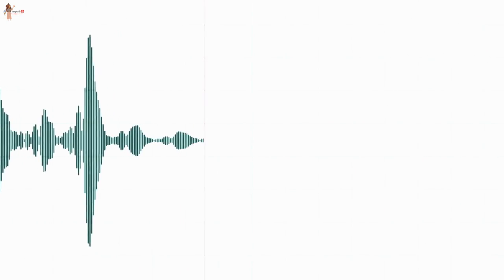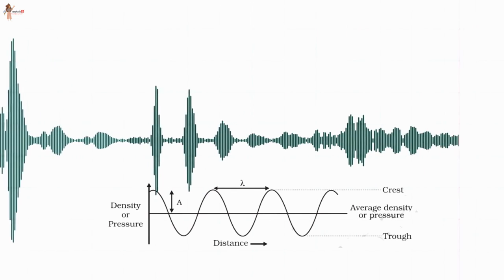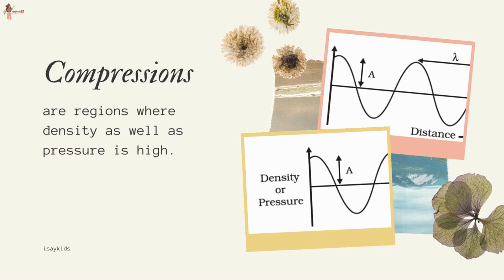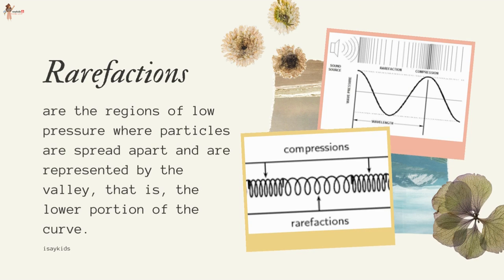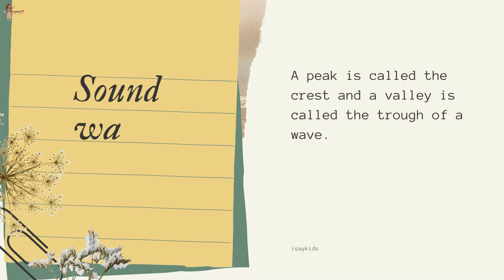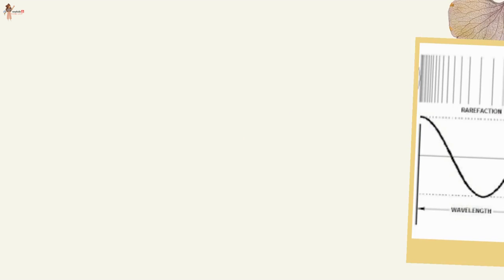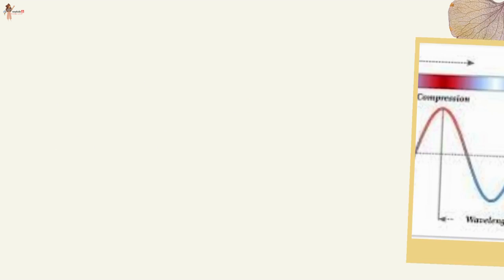Compressions are the regions where particles are crowded together, represented by the upper portion of the curve. The peak region represents maximum compression — thus compressions are regions where density and pressure are high. Rarefactions are the regions of low pressure where particles are spread apart, represented by the valley (lower portion of the curve). A peak is called the crest and a valley is called the trough of a wave. The distance between two consecutive compressions or two consecutive rarefactions is called the wavelength, usually represented by the Greek letter lambda. Its SI unit is meter.